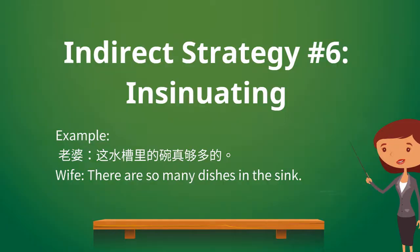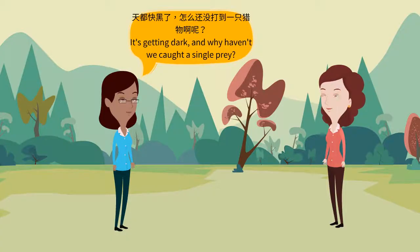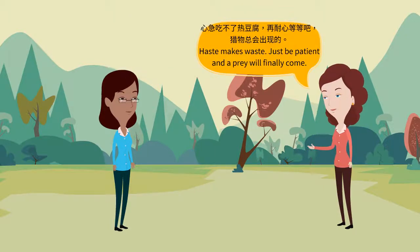The next strategy is insinuating, which is to imply indirectly. By implying a situation or a problem, you encourage others to take desirable actions. You can also use a metaphor or a Chinese idiom to support your persuasion. Example: 天都快黑了，怎么还没打到一只猎物啊？ 心急吃不了热豆腐，再耐心等等吧，猎物总会出现的啊。